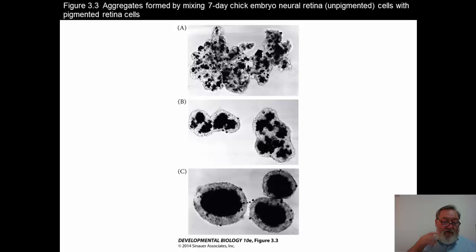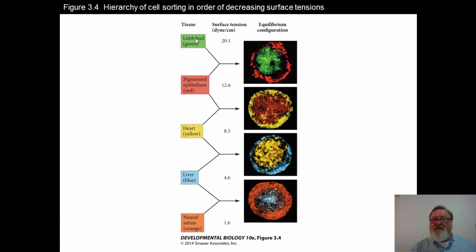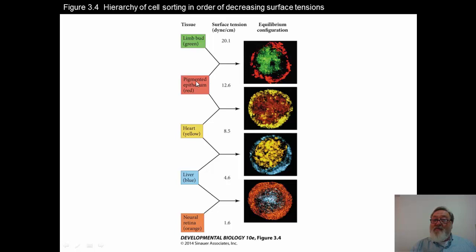In further studies, Professor Steinberg and colleagues found a hierarchy in sorting. Dissociating cells and mixing them with other cells showed that depending on the surface tension available, cells would be on the inside or outside. The higher the surface tension, the more the cells stick together and aggregate into a tighter-bound group, not allowing other cells in. For example, the limb bud cells were green — very tightly bound, high surface tension. Pigmented epithelial cells were red. However, when pigmented epithelial cells were mixed with heart cells, the pigmented epithelial cells ended up on the inside.